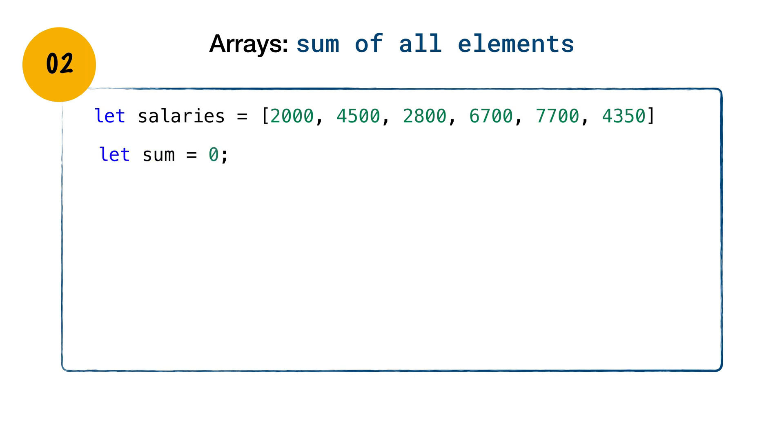Now another way to solve the same problem is to again have the sum variable initialized to zero. Then call salaries.values method which returns an iterator containing the values at each index in the array. We store that inside an iterator variable. Now we use a for of loop to iterate over every value of the iterator.